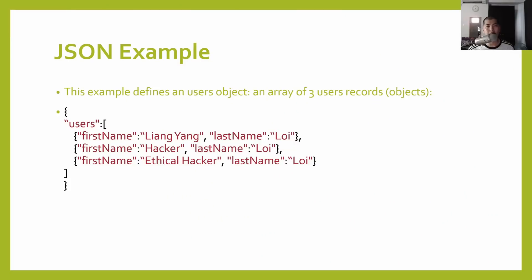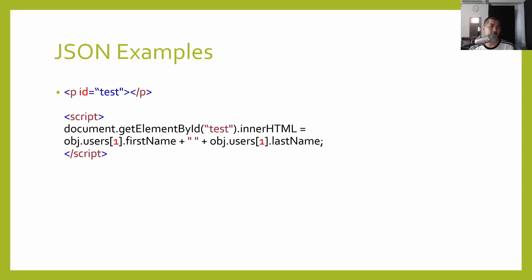Here's an example of JSON. We have users with first name and last name - essentially representing data coming from the database to the web application server and then to the user's browser. We have username, first name, and last name across three rows of records or objects.